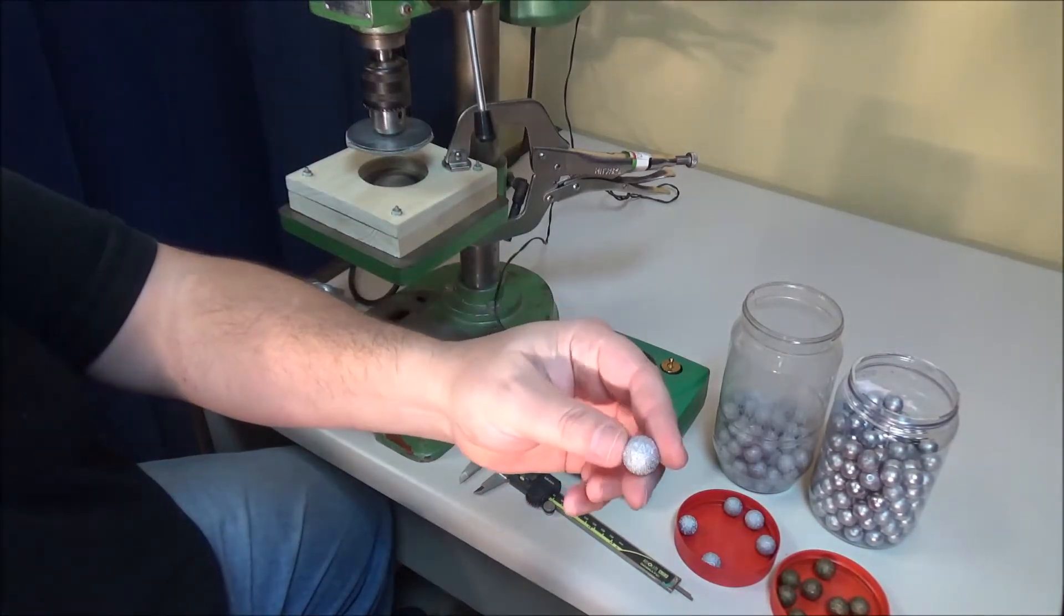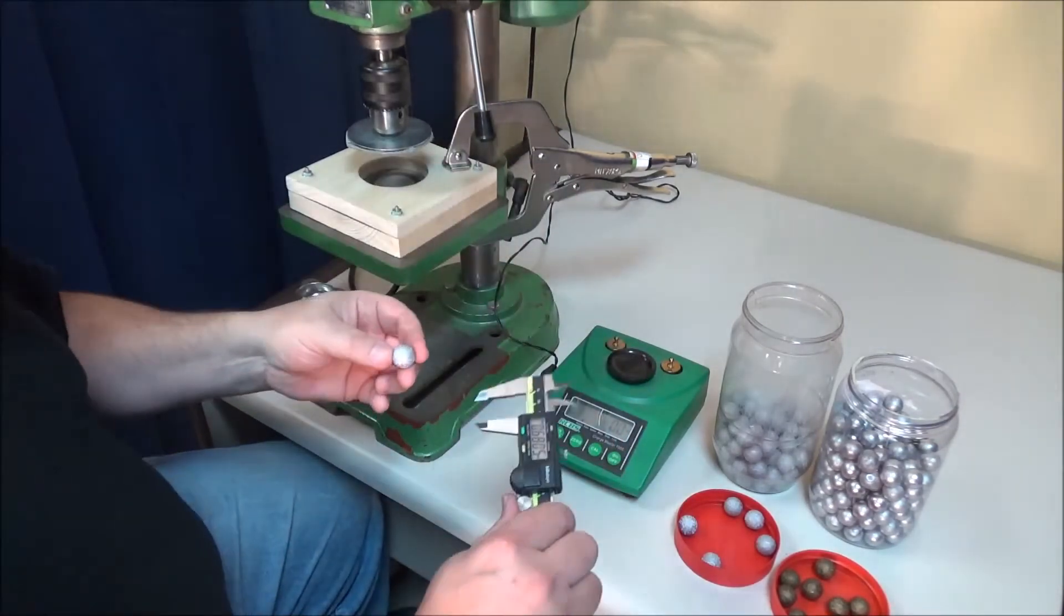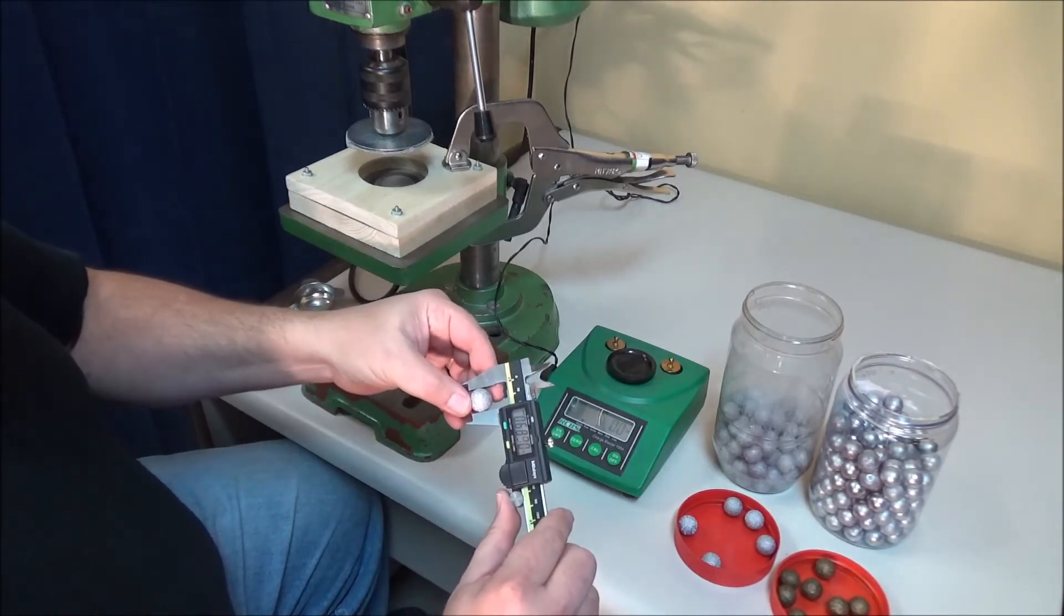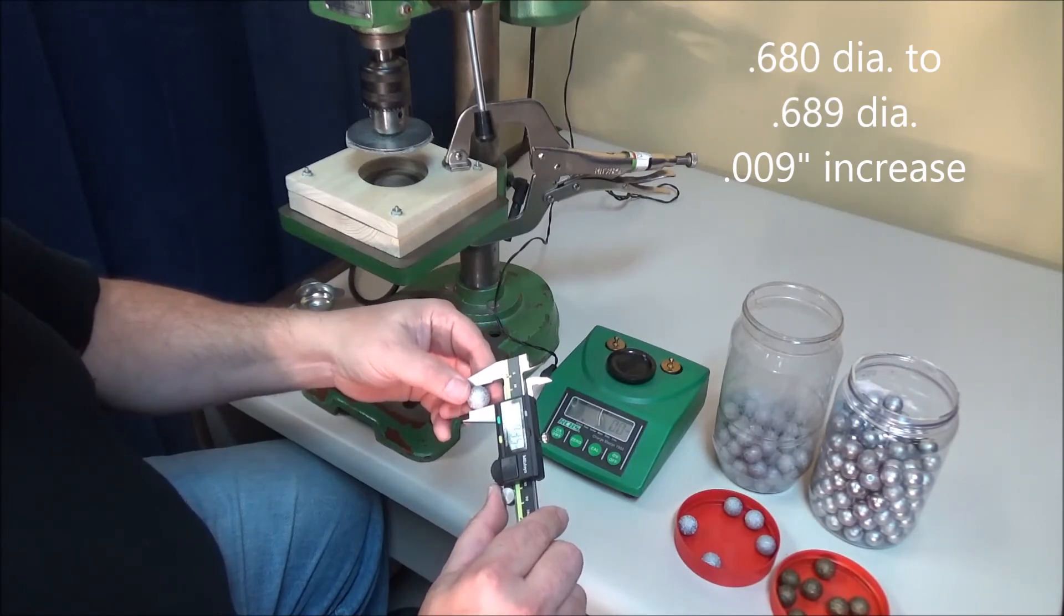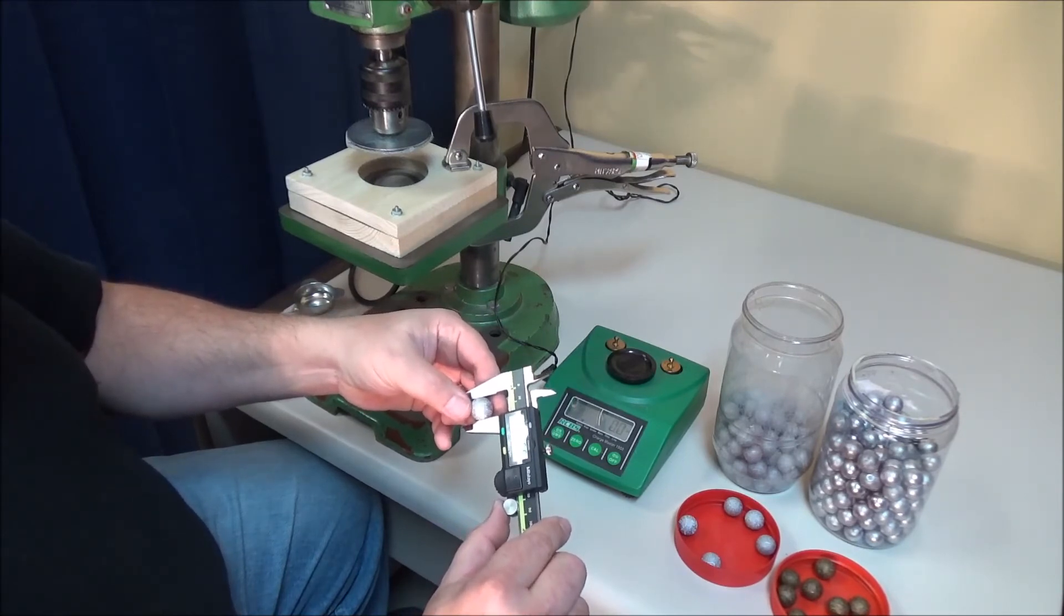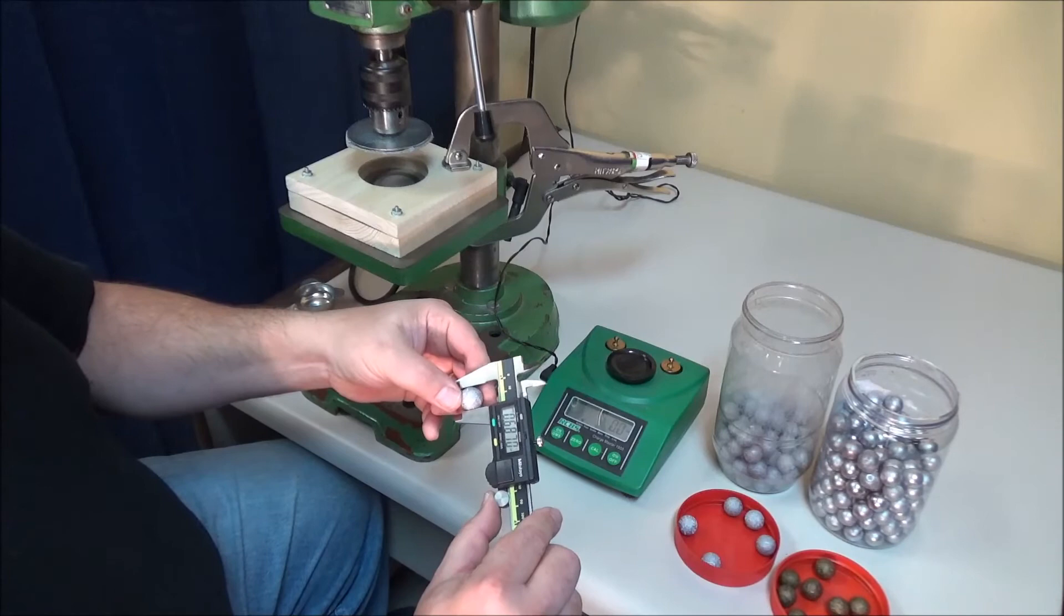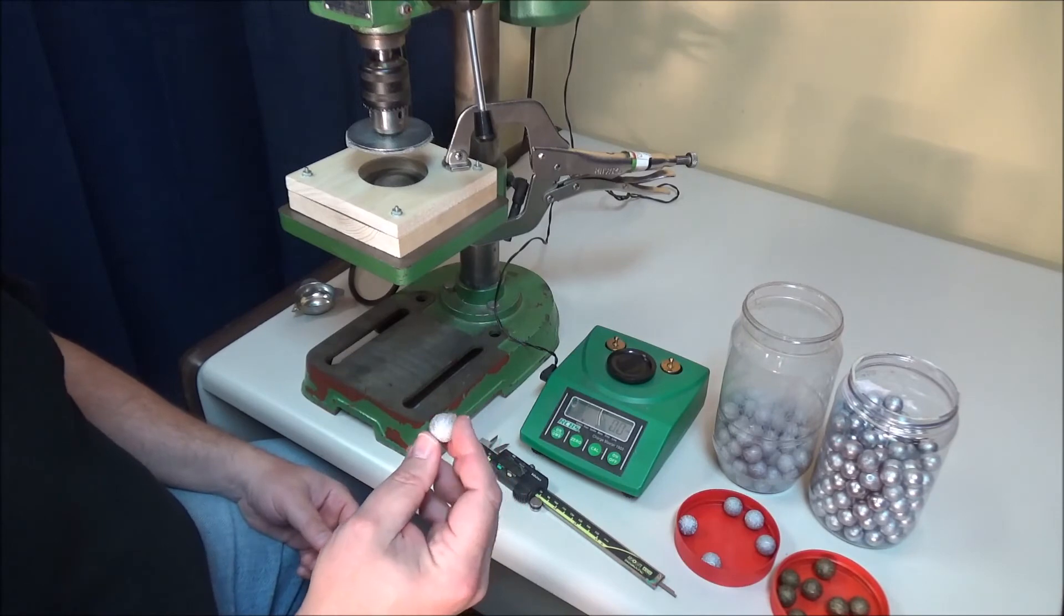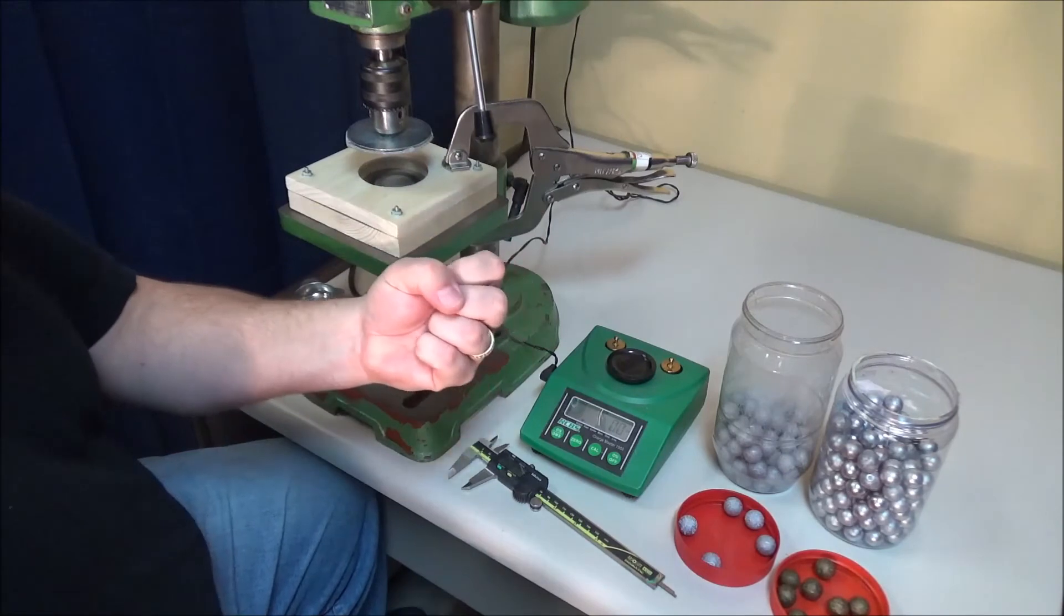Okay. There's the processed bullet. You can see where the sprue was there. Okay. So 0.689, so it grew about 9 thousandths. 0.6835, so about 4 thousandths increase. 0.6855, about 6 thousandths. 687, so about 7 thousandths. So what I typically see is about a 5 to 10 thousandths increase in diameter.